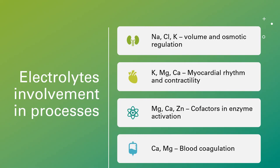For blood coagulation, we have calcium and magnesium. We also have potassium, calcium, and magnesium that promote neuromuscular excitability. Production and use of ATP from glucose includes magnesium and phosphate. All these physiological functions require electrolytes, which is why the study and maintenance of electrolytes is essential.